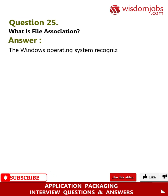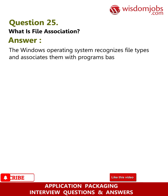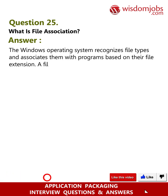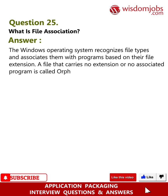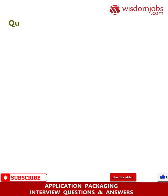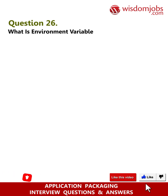Question 25: What is a file type? Answer: The Windows operating system recognizes file types and associates them with programs based on their file extension. A file that carries no extension or has no associated program is called orphaned.